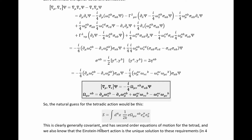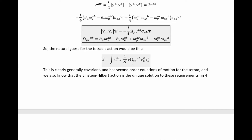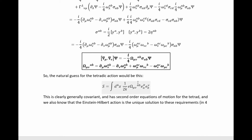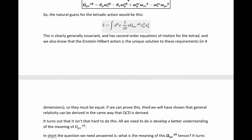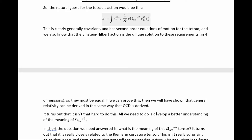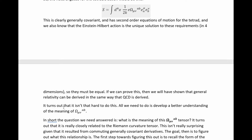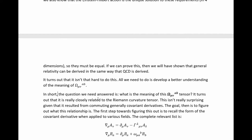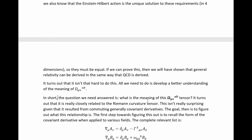This action is clearly generally covariant, and as discussed it has second-order equations of motion for the tetrad. We also know that the Einstein-Hilbert action is the unique solution to these requirements, at least in four dimensions. So our guess is that this isn't just the only sensible action for a theory with this result for the commutator of gauge covariant derivatives — our guess is that this is equal to the Einstein-Hilbert action. If we prove this, we will have shown that general relativity can be derived in the same way as QCD. It turns out this isn't actually hard to do. All we need is to develop a better understanding of this omega tensor — specifically, what is its meaning? It turns out it is closely related to the Riemann curvature tensor, and as a result it's quite easy to prove that this action really is just the Einstein-Hilbert action.